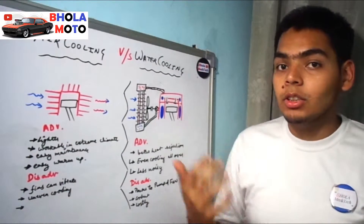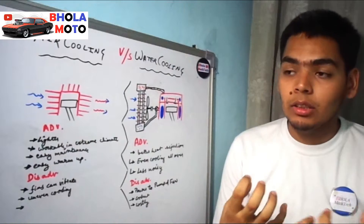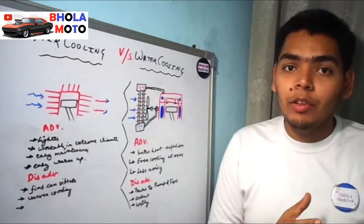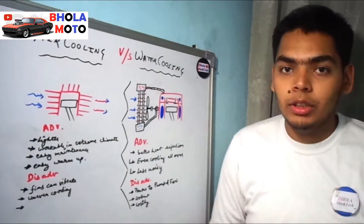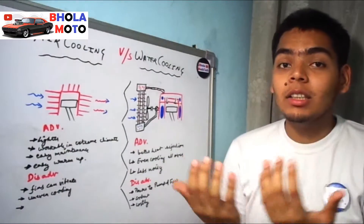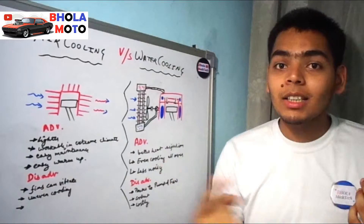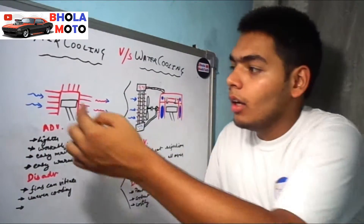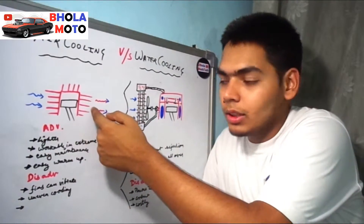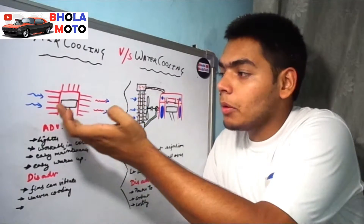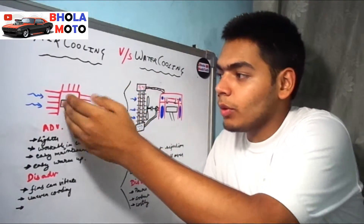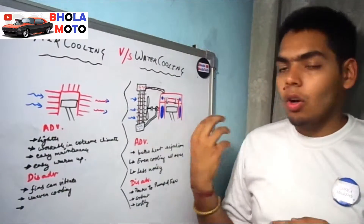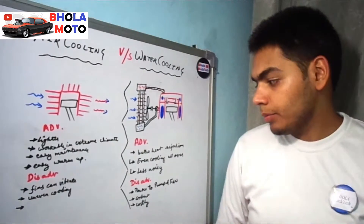Coming to the advantages of the water-cooled engine: it has better heat rejection at higher temperatures and can reject heat much more efficiently than an air-cooled engine, especially for larger engines. Another advantage is that the cooling is evenly distributed all over the engine because the water jacket surrounds the entire engine. With air cooling, the incoming air cools one side well but by the time it reaches the other side it is already hot, so that side gets less cooling. Water provides even heat rejection all around.